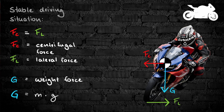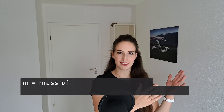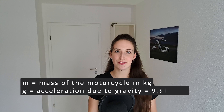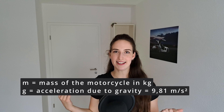Qi is the weight force. It can be calculated by multiplying the mass of the motorcycle by the acceleration due to gravity. Since neither the mass of the motorcycle nor the acceleration due to gravity changes with a change of lean angle, the force Qi always stays the same for a given motorcycle — no matter the speed, corner radius, or lean angle.